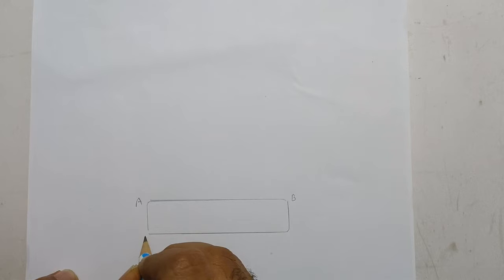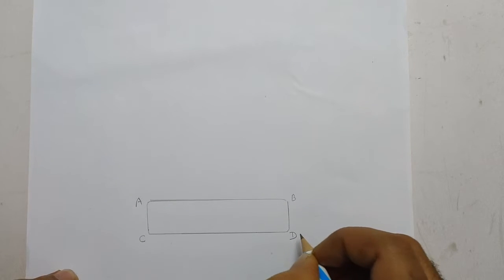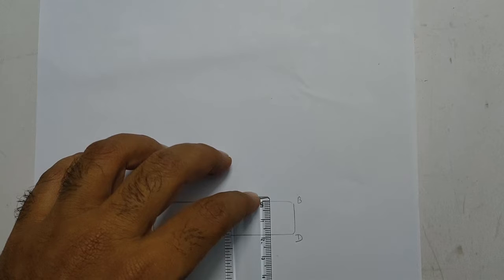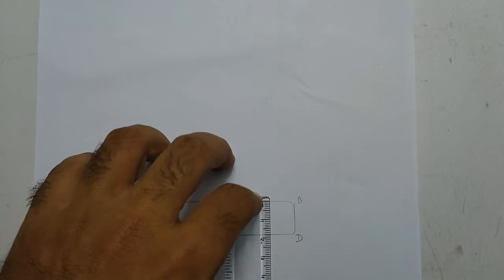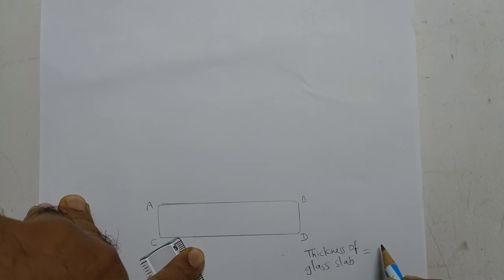The lines form a rectangle and name the vertices as A, B, C and D. Now measure the thickness of the slab and you can note it on the paper as thickness of the glass slab is equal to 1.9 centimeters.